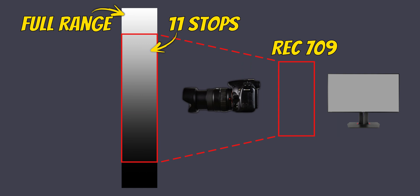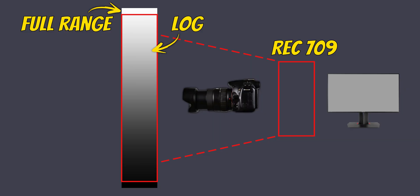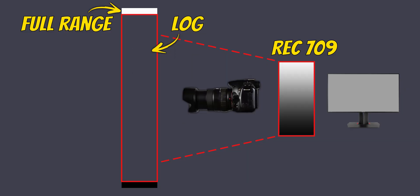Over time, cameras became much better, so today many cheap cameras can capture around 11 stops in standard profiles and cram them into 6. More interestingly, they are capable of recording even more, and this is where Log profiles come into play. When recording in a Log profile, modern cameras can capture somewhere between 14 and 16 stops of dynamic range.